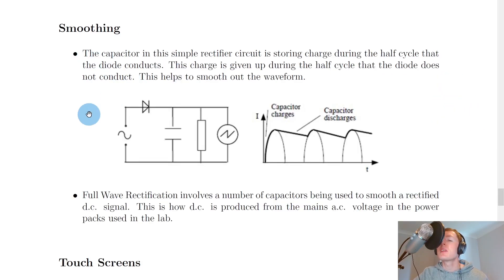Next we have something called smoothing. The capacitor in this simple rectifier circuit is storing charge during the half cycle that the diode conducts. This charge is given up during the half cycle that the diode does not conduct. This helps to smooth out the waveform.